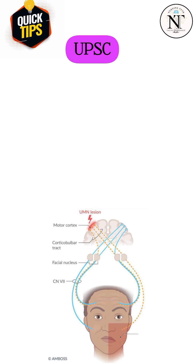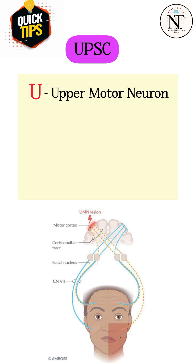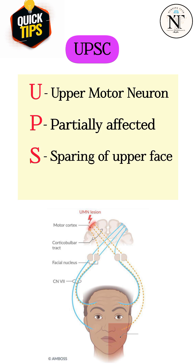For upper motor neuron, the mnemonic is 'UPSC.' U stands for upper motor neuron, P stands for partially affected or lower face is affected, S stands for sparing of upper face, and C stands for contralateral meaning opposite side.